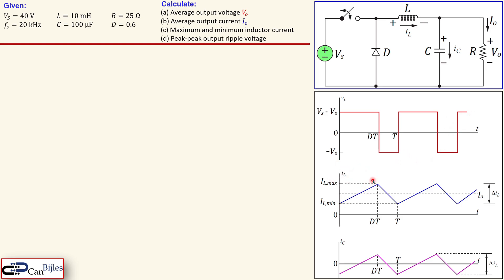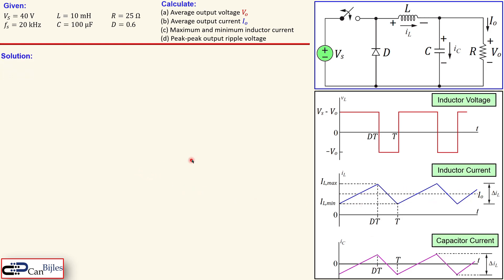The sequence will repeat itself in a similar fashion. The inductor current is given by this ripple configuration. You see also in the middle that the average load current equals the average inductor current. The capacitor current will be then shifted down by this average current, going up and down in a similar fashion as the inductor current but shifted down by the average load current.